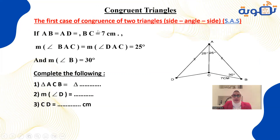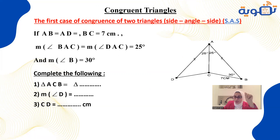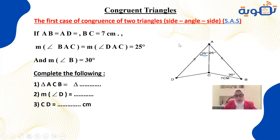Now we'll talk about triangle congruence. The first case is Side-Angle-Side (SAS): two sides with an included angle between them — it looks like a nutcracker. Given triangle ABC where AB equals AD and BC equals 7 cm, the measurement of angle B equals 30 degrees and the measurement of angle DAC equals 25 degrees.